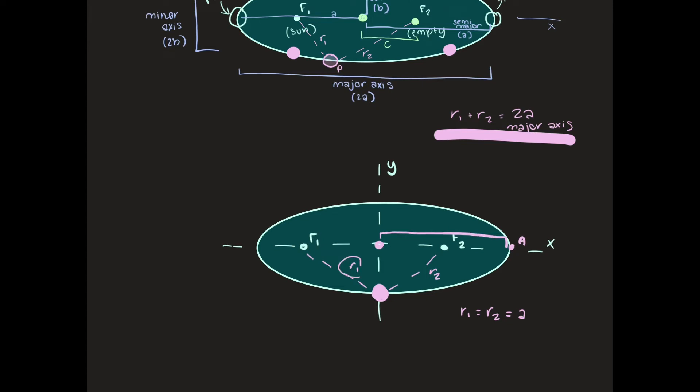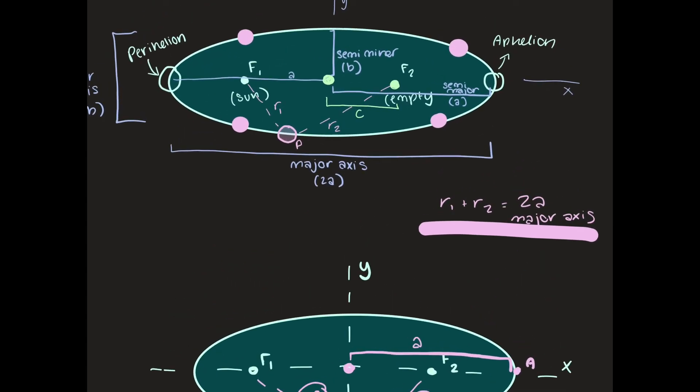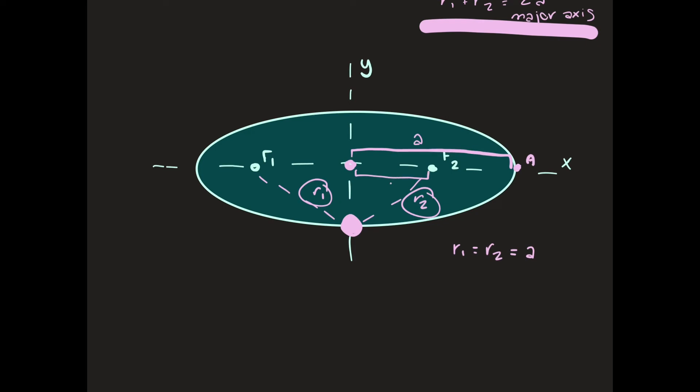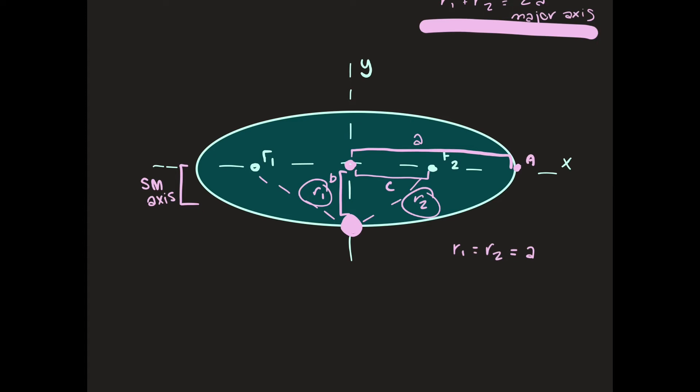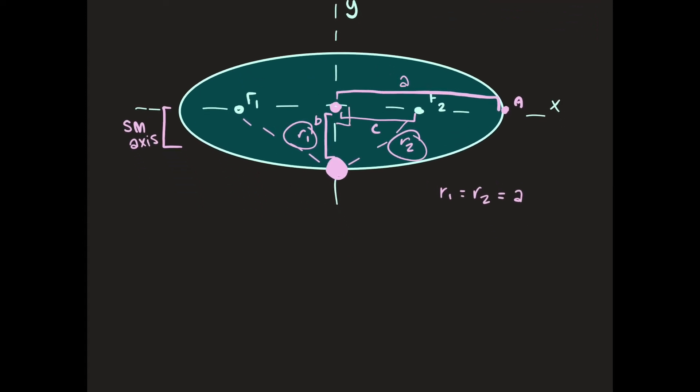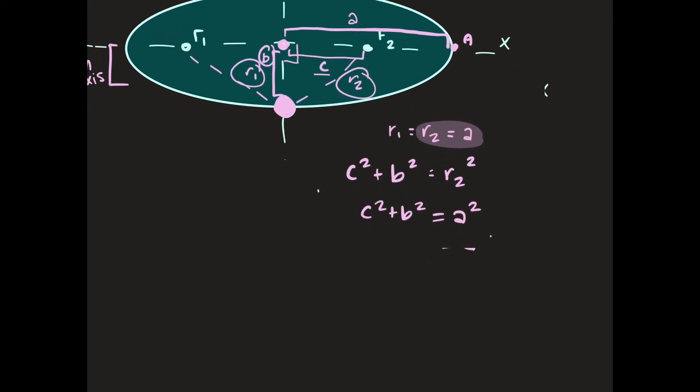They are both equal to a which is the semi-major axis stretching from the center to the aphelion. So because this is true, because r1 equals r2 which is equal to a and we know that the distance from our central point to a foci we know that's equal to c so let's draw that right here that's equal to c and we also know that this is equal to b since this is our semi-minor axis. So right now we formed a right triangle we know that c squared plus b squared is equal to r2 squared but we also know that r2 is equal to a so we can substitute r2 for a.